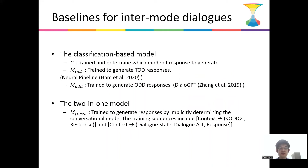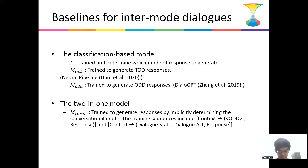There are two ways to use end-to-end modeling for inter-mode dialogue systems. First, we have the classification-based model, where two response generation models are independently trained to handle each conversation mode, and a separate classification model determines which model generates the response. Second, we have the unified model, which is a single model that generates a response given any conversational context. We also have a third model that unifies the representations of the TOD and ODD sequences by introducing a new token, [ODD].